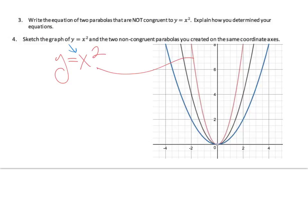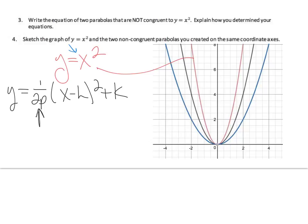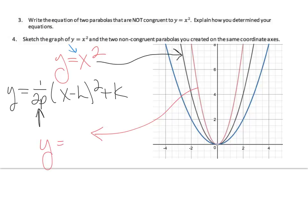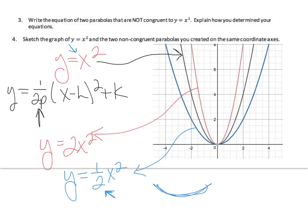We learned that y equals 1 over 2p times (x minus h) squared plus k, and this is what I can mess with to change my parabola. The one inside y equals x squared is y equals 2x squared, and the one on the outside is y equals ½x squared. The smaller the denominator, the more spread out your parabola becomes; the bigger this number, the tighter the parabola is on the y-axis.